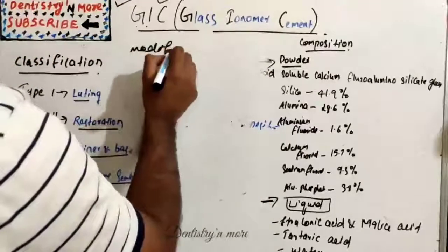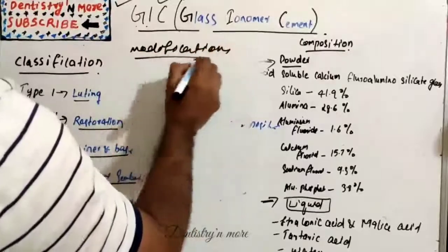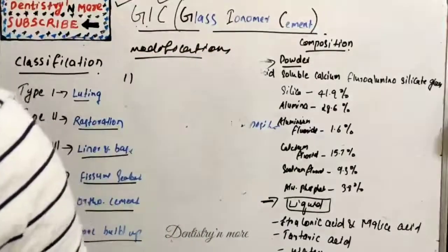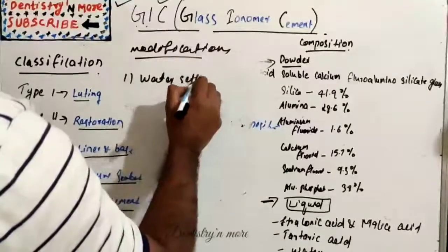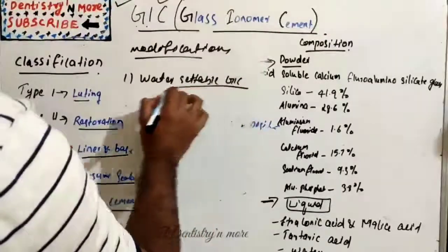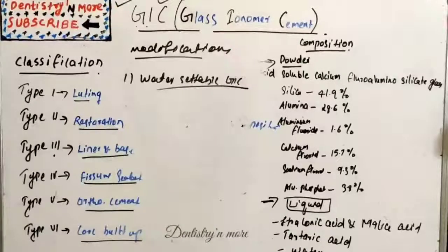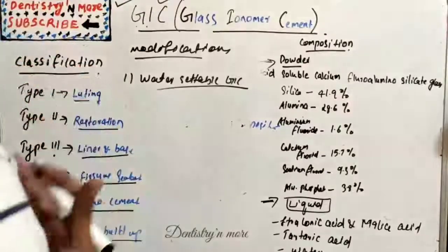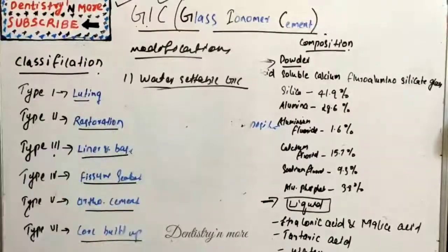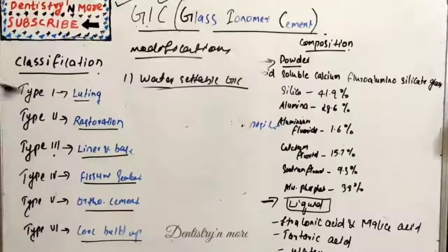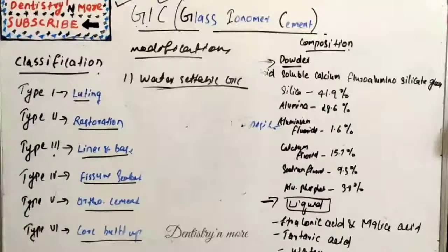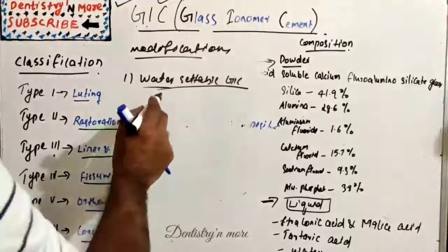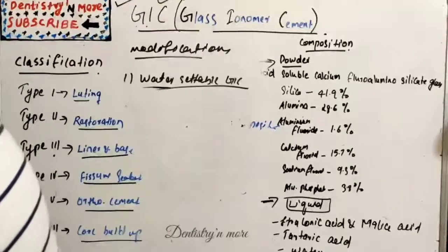We have few modifications with respect to GIC. The first one is water-settable GIC. The main problem of conventional GIC was its water sensitivity. It is so much of a problem facing with water. The water has to be kept away from it during the setting reaction. So this water-settable GIC liquid is delivered in a freeze-dried form which is incorporated into the powder. Liquid used is clean water - the liquid is provided in freeze-dried form.